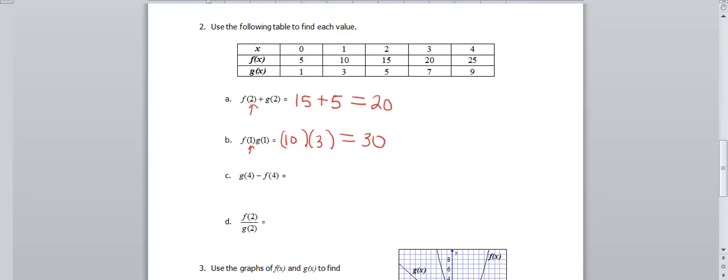Next problem is a subtraction problem. And again, our input this time is 4. And you notice it's the same for both. It doesn't have to be, but that's typically going to be the way you're going to see them. And since it is subtraction, the order of these really does matter. So g(4) is 9. So I'm going to do that one first. Minus f(4), which is 25. So when we do 9 minus 25, I believe that gives us a total of negative 16.